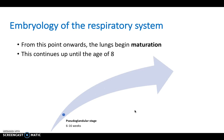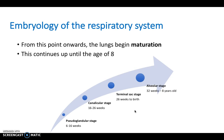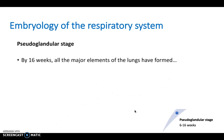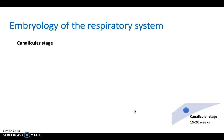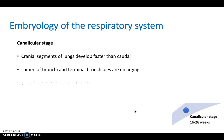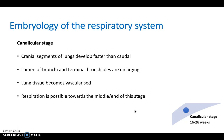Lung development is divided into four stages. The pseudoglandular stage (6–16 weeks): all major lung elements form except those involved in gas exchange — a fetus born at 16 weeks cannot respire. The canalicular stage (16–26 weeks): cranial segments develop faster, bronchial and terminal bronchiole lumens enlarge, and lung tissue becomes vascularized — respiration is possible towards the end of this stage, with babies born as early as 22 weeks surviving with support due to primordial alveolar sacs.